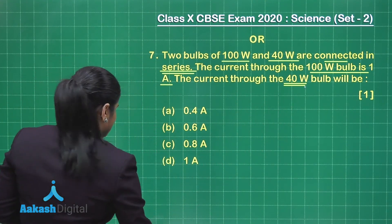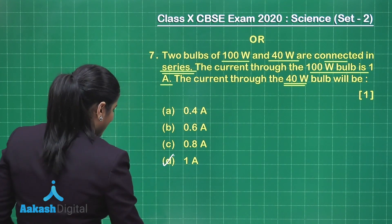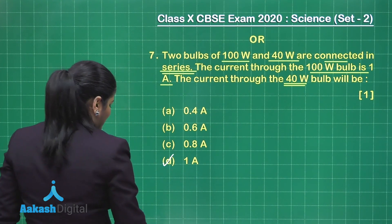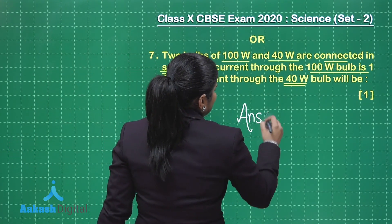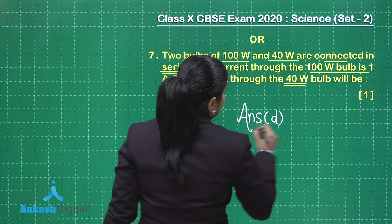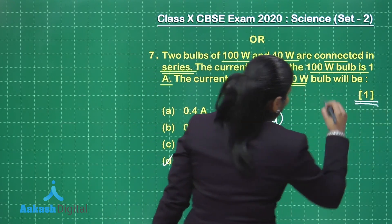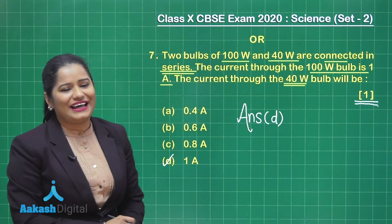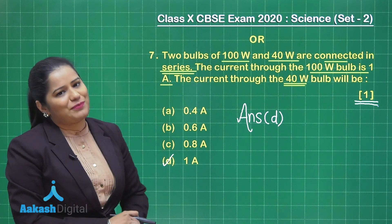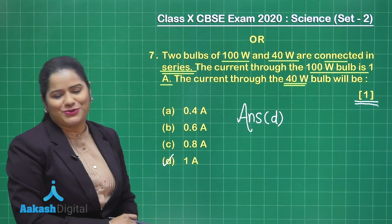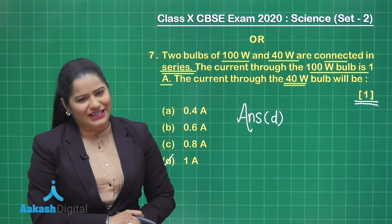So which option is the correct option? That is option D. The answer to this question is option D. If you have marked option D as the correct option, then for this question you will definitely get one mark.